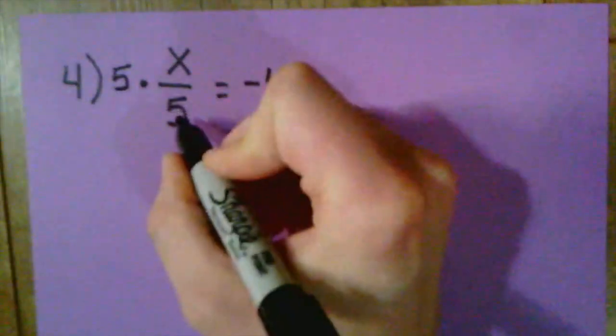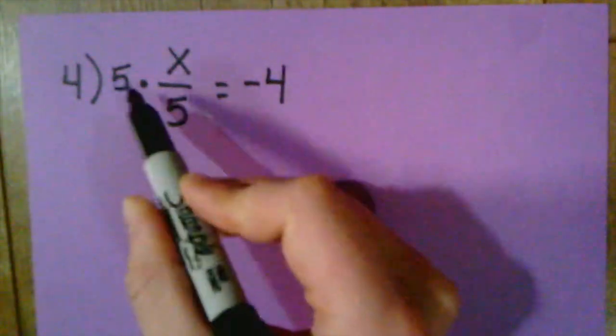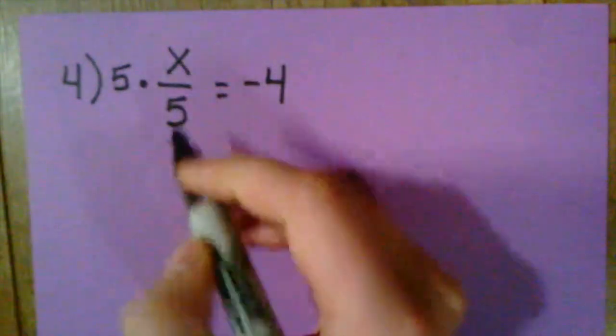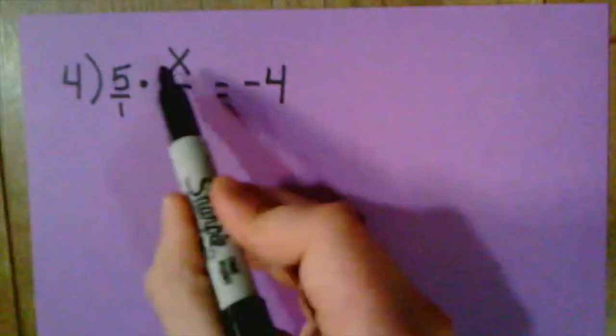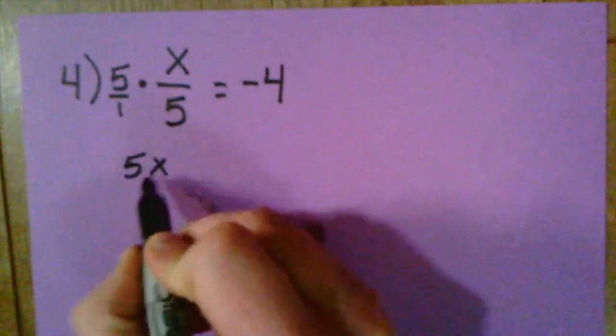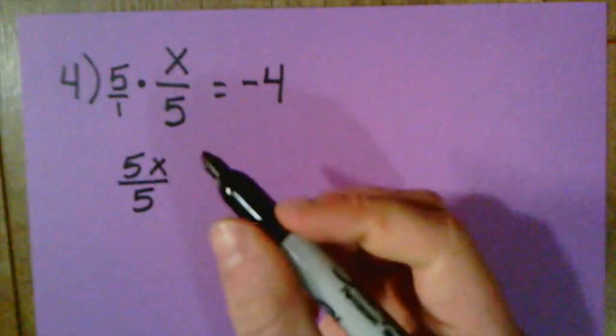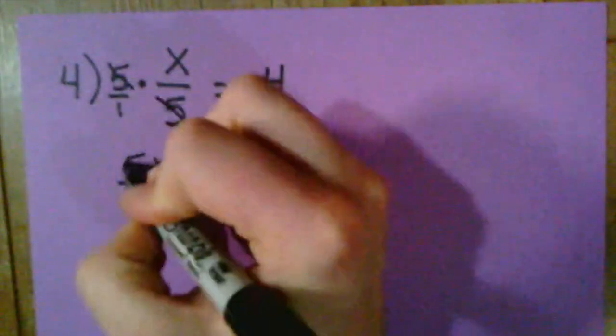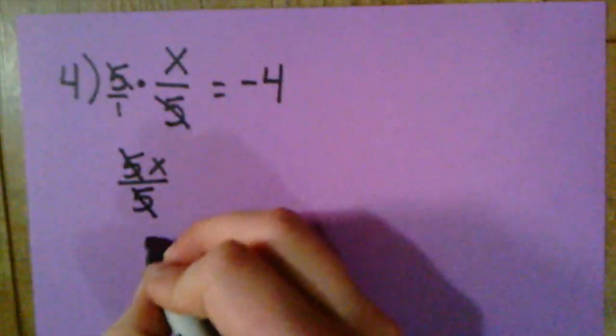So I'm going to multiply by the same number that I have because now if I have 5 and I multiply this by 5, I'm actually just multiplying through the top. So we have to think about our fraction rules. When I'm multiplying, I'm really just multiplying 5 times X and then 1 times 5. So I could rewrite this as 5X over 5 if I wanted to. Either way, my 5's are going to cancel out because 5 divided by 5 is just 1, and so I would be left with X.